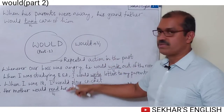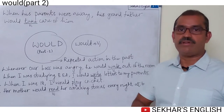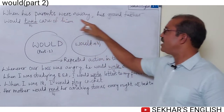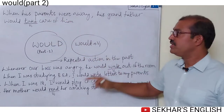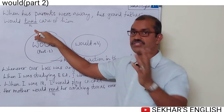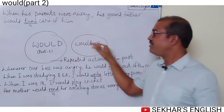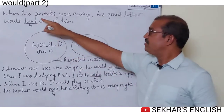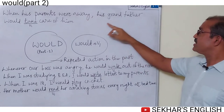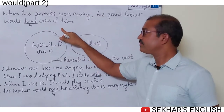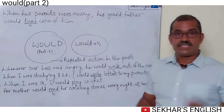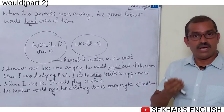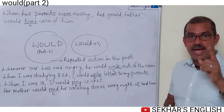Let's go through some examples. First: 'When his parents were away, his grandfather would take care of him.' Here you see 'would take' — 'take' is the V1 form. The structure is 'would' plus V1, that's why we use the base form of the verb 'take.' His grandfather taking care of him when his parents were away is a repeated past action.